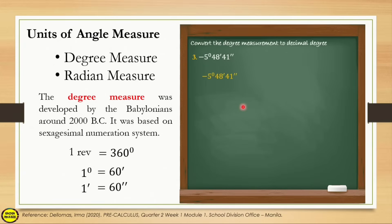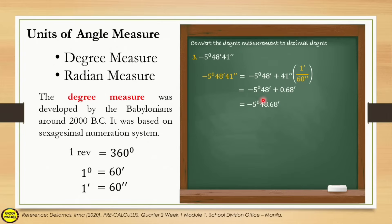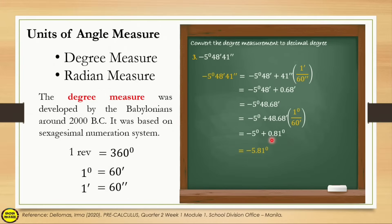We have negative 5 degrees, 48 minutes, and 41 seconds. Convert 41 seconds to minutes: 41 times (1/60) = 0.68 minutes. Add to 48 minutes: 48 + 0.68 = 48.68 minutes. Convert 48.68 minutes to degrees: 48.68 times (1/60) = 0.81 degrees. Add to negative 5 degrees: negative 5 + 0.81 = negative 5.81 degrees. I hope you learned how to convert degree measurement to decimal degrees.